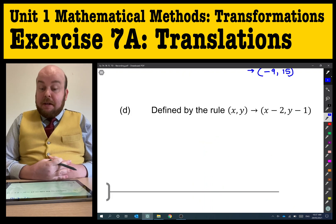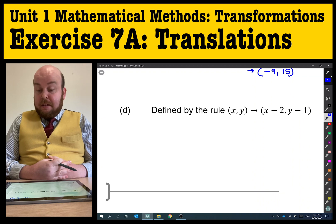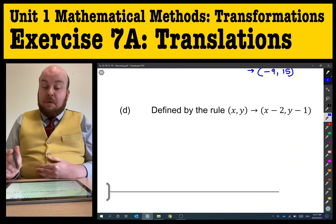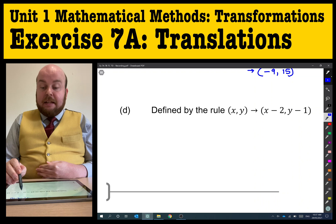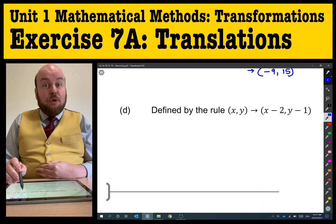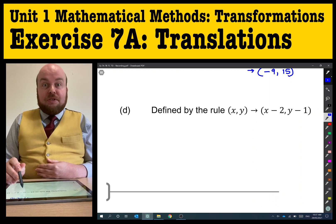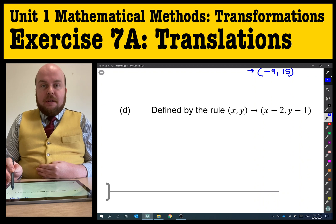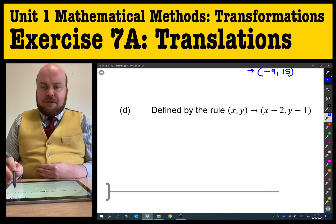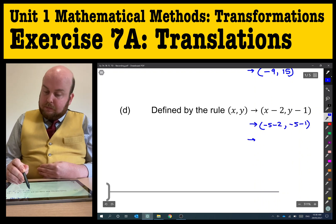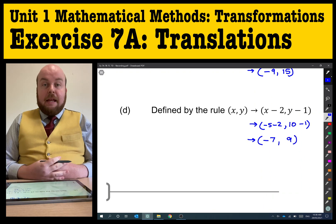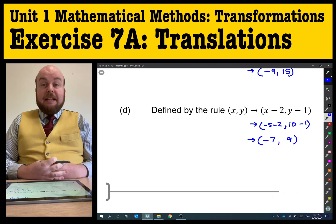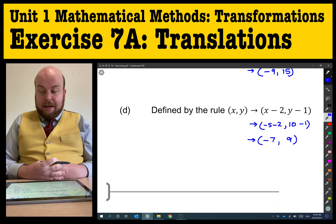Part D: Defined by the rule, (x,y) forms (x - 2, y - 1). So this is saying that this has been translated two units in the negative x direction and one unit in the negative y direction. And there we go. The final coordinates for that is (-7,9). We'll see you next time.